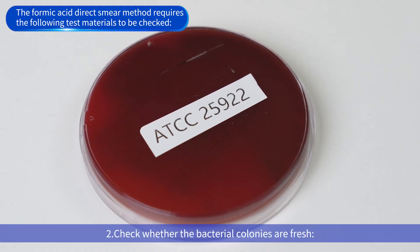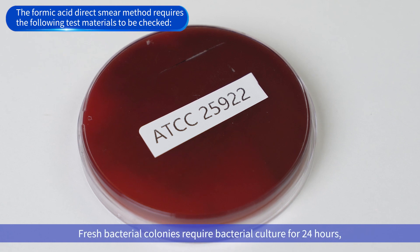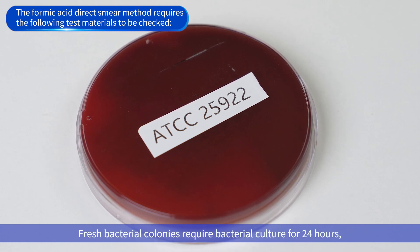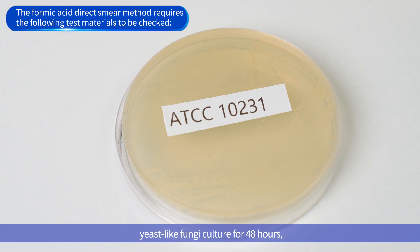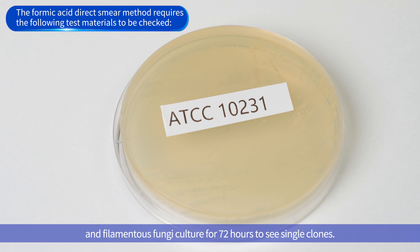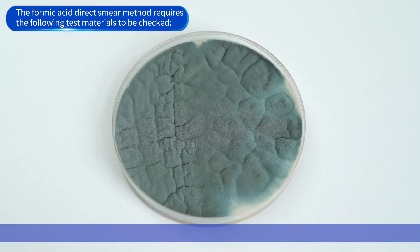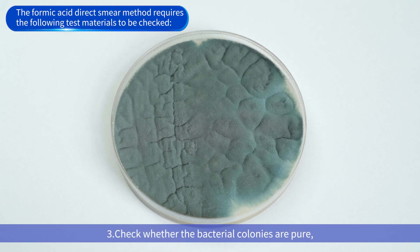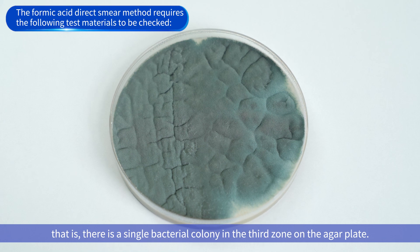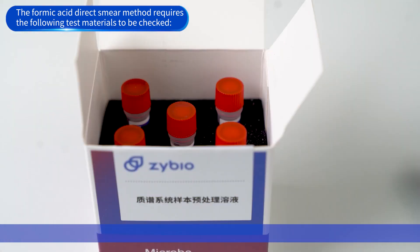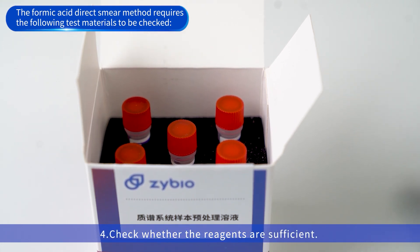Second, check whether the bacterial colonies are fresh. Fresh bacterial colonies require bacterial culture for 24 hours, anaerobic bacterial culture for 72 hours, yeast-like fungi culture for 48 hours, and filamentous fungi culture for 72 hours to see single clones. Third, check whether the bacterial colonies are pure, i.e., there is a single bacterial colony in the third zone on the agar plate. Fourth, check whether the reagents are sufficient.